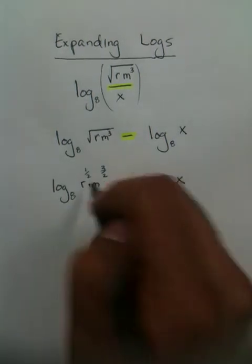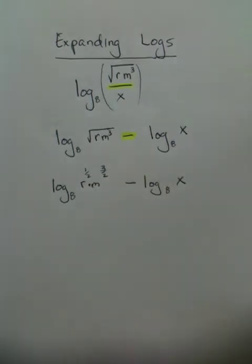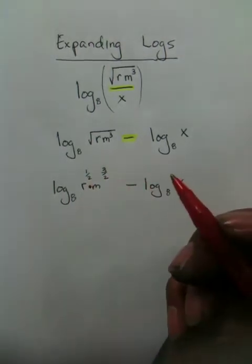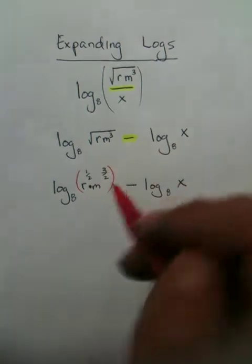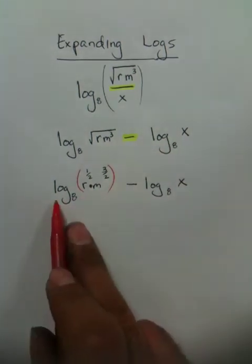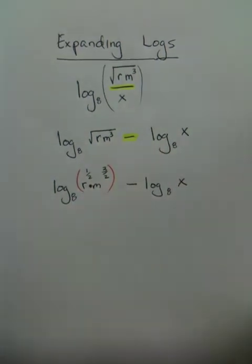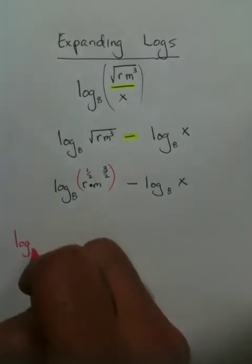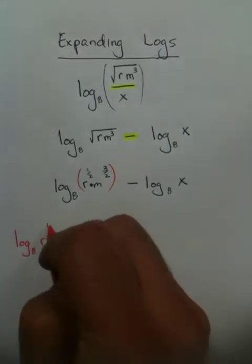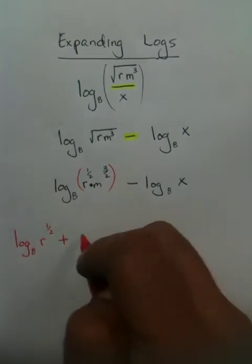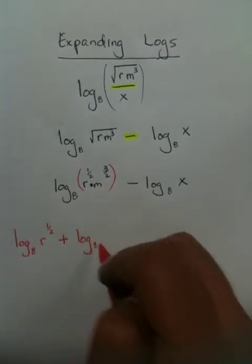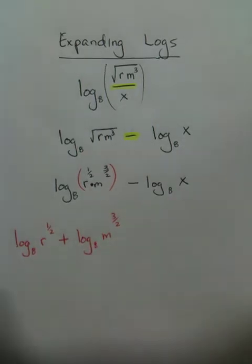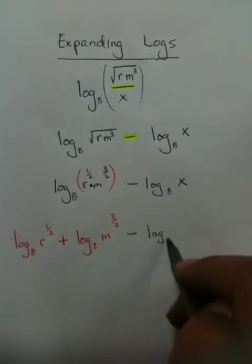Here we have a multiplication problem. Now there is a rule that says if you multiply two things together right behind a log, you may also separate them so that it would become log sub 8 of r to the one-half power plus log sub 8 of m to the three-halves power minus log sub 8 of x.